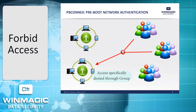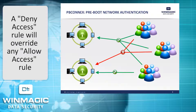PB-Connects also allows the creation of relationships that expressly forbid access. In this example, all members of both groups at top left are expressly forbidden to access devices in the device group at lower left. Forbidding access overrides any relationship that allows access.